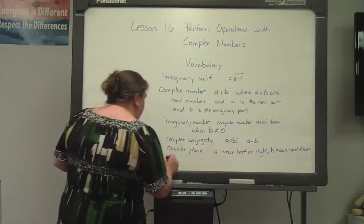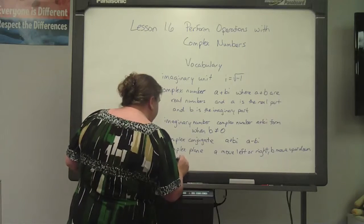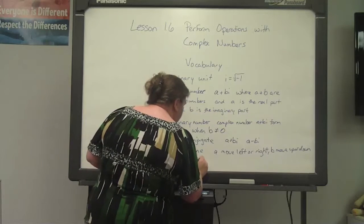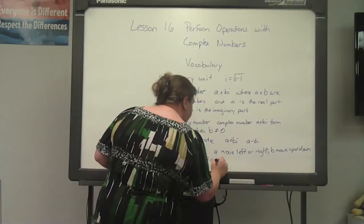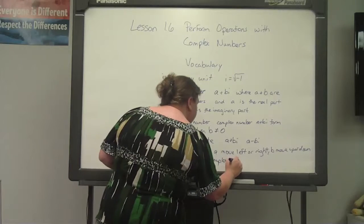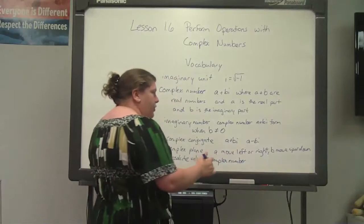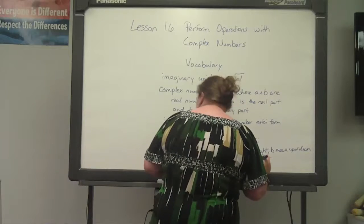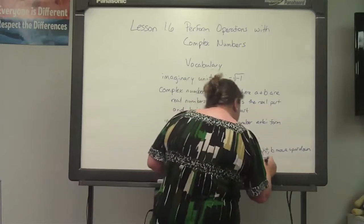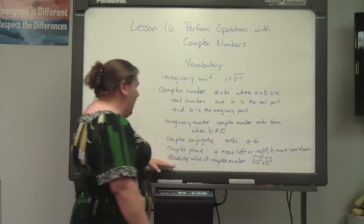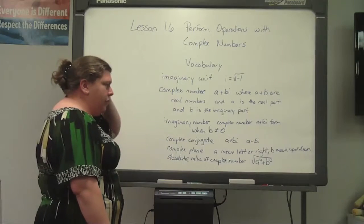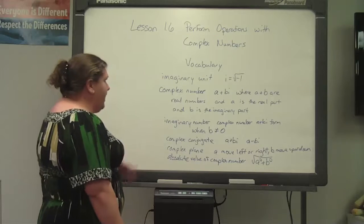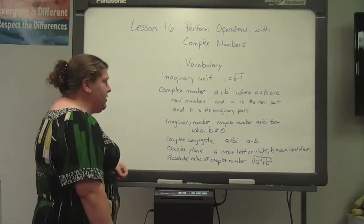The last vocabulary term is the absolute value of a complex number. It is found by taking the square root of a squared plus b squared. And that's how you find the absolute value of your complex number. So here is all the vocabulary we are going to be working with in today's lesson on performing operations with complex numbers.